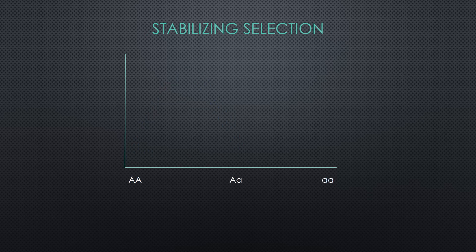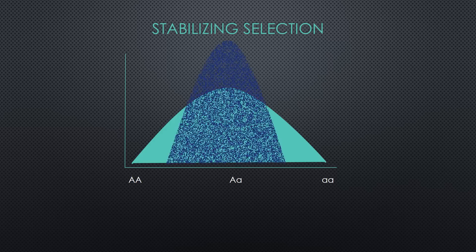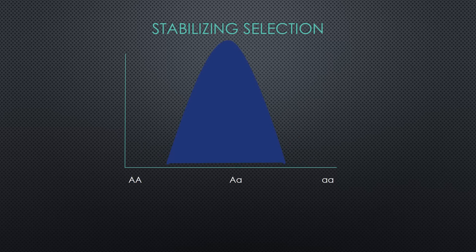Now let's go back to our original population and see how stabilizing selection would have an effect. In stabilizing selection, the heterozygous individuals are selected for. The new population has more big A little a genotypes than big A big A or little a little a. However, stabilizing selection does not alter allele frequency and actually causes the big A and little a alleles to be more equal.